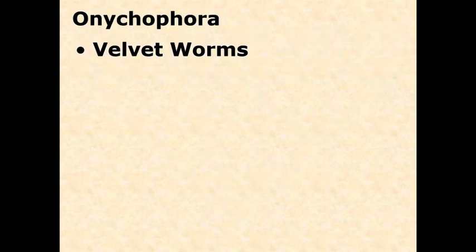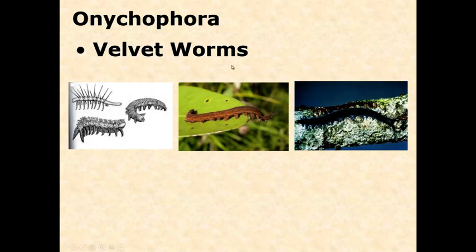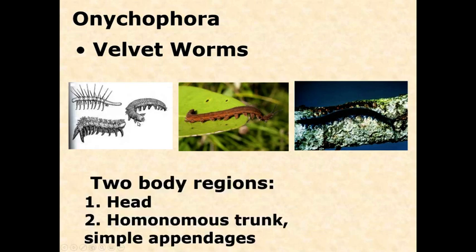The outgroup for the arthropods, which we've mentioned previously, are the velvet worms. Velvet worms are externally segmented. This group, Onychophora, was once much more diverse, and we have examples from the fossil record — there were many marine representatives. Today there are only a handful of species, found primarily in tropical but some temperate rainforests where it stays wet. They are all terrestrial today, despite having some ancient marine diversity.